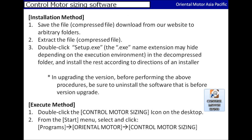Please download the file, which will be in compressed format from our website, to an arbitrary folder and extract the file. Next, double click on the setup file where the extension would be in .exe, found in the decompressed folder, and install the rest according to the directions of the installer.